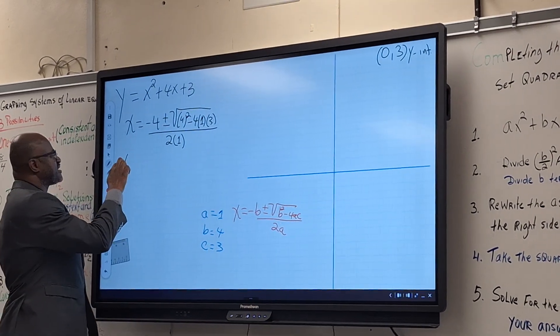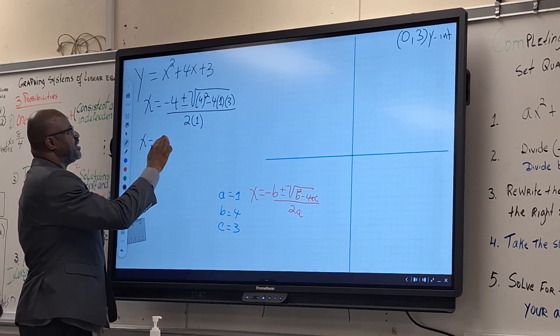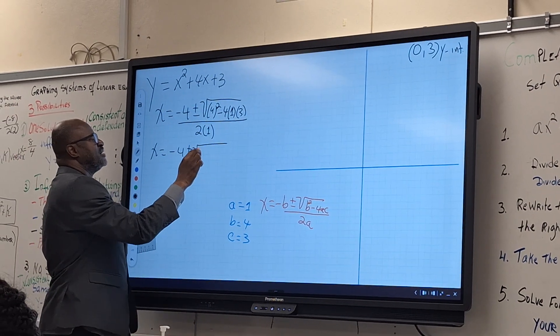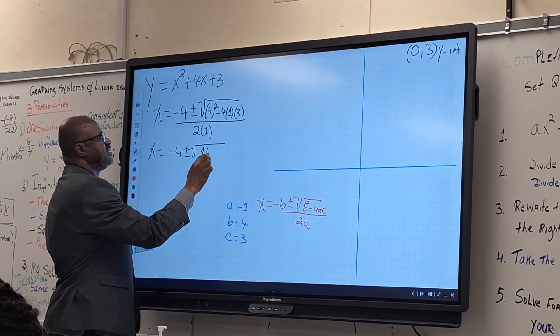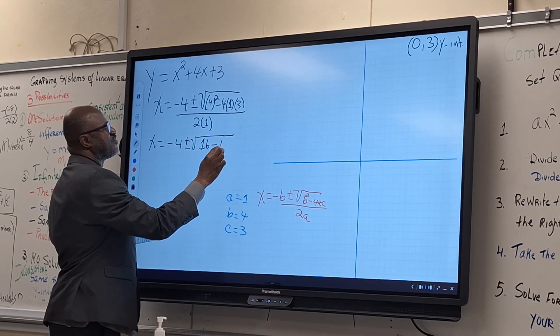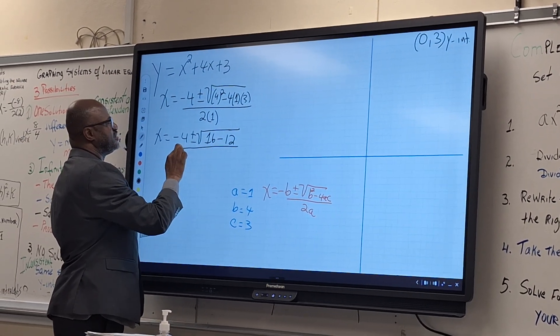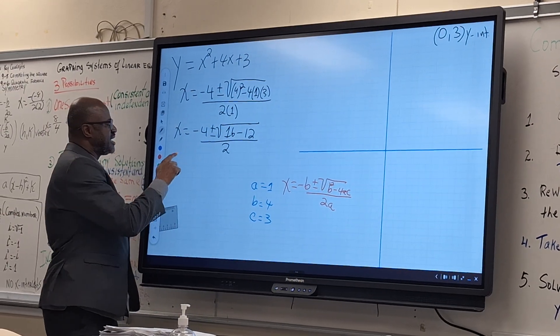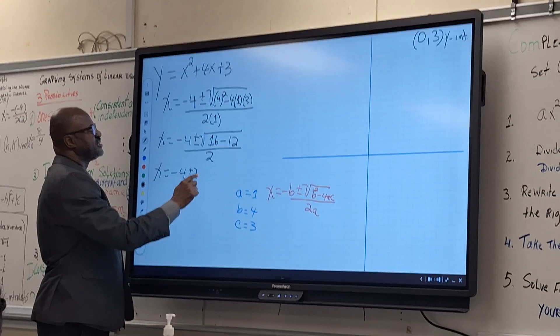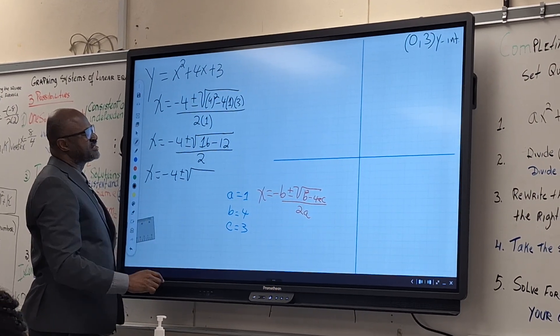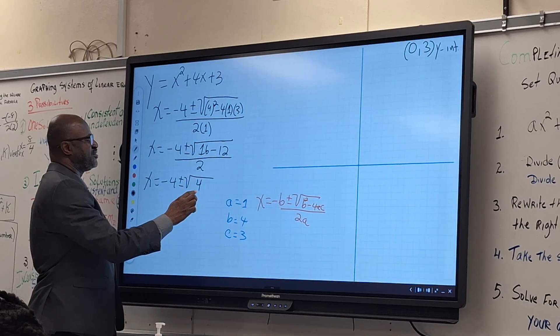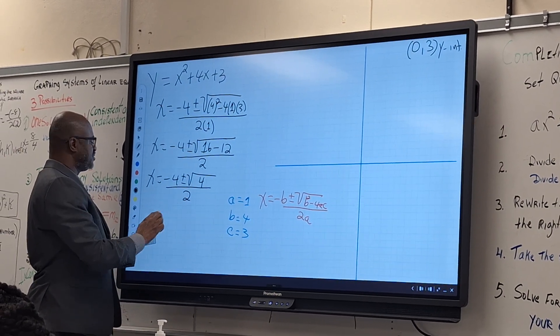So we have x equal minus four plus or minus, that will be four squared is sixteen, minus twelve over two. Next step: x equal minus four plus or minus, sixteen minus twelve is four. Square root of four, everything will be two.